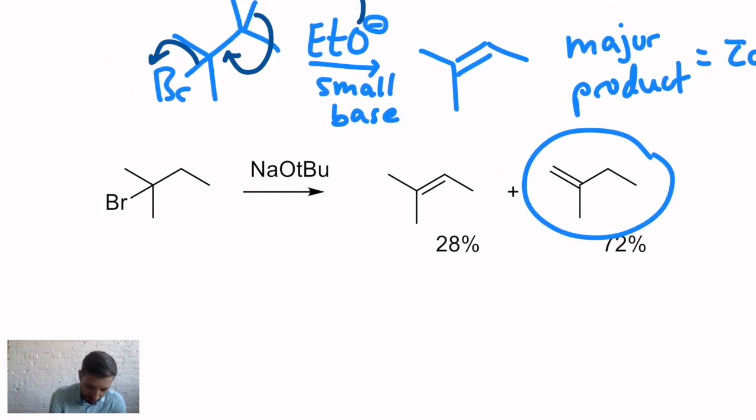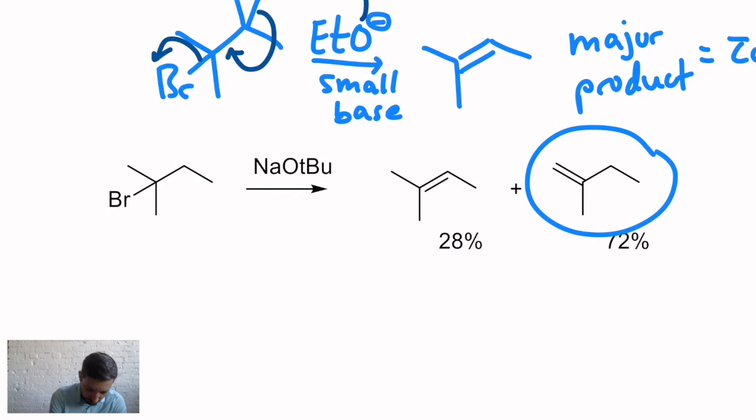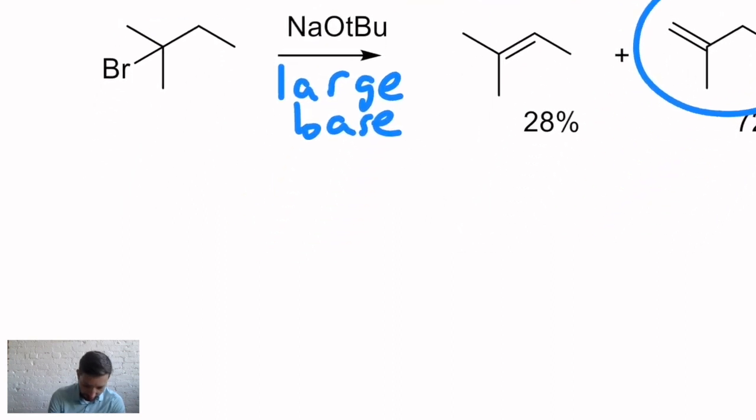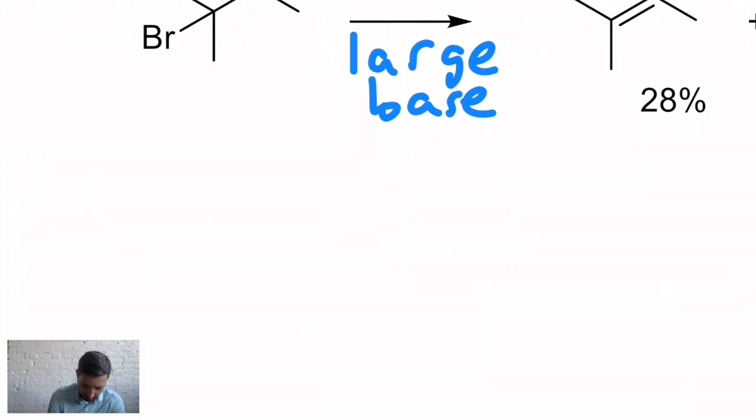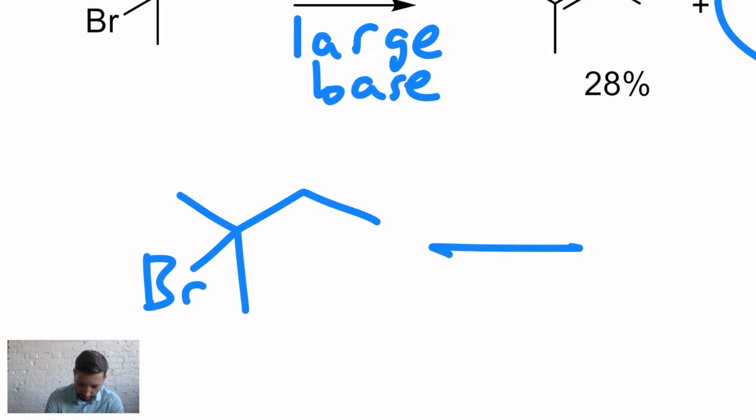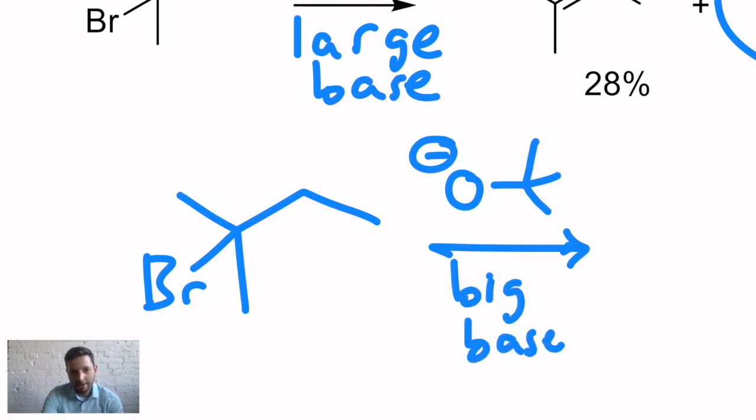And all we did was use a large base. In this case, that's t-butoxide. So if I redraw this starting material, the same tertiary halide, so a great candidate for an E2. Why is this such a large base? Well, remember what TBU means. It's a tert-butyl group attached to that oxygen. Big base.